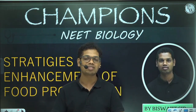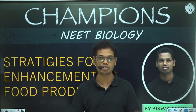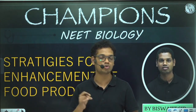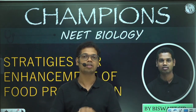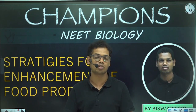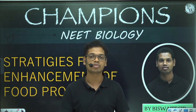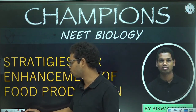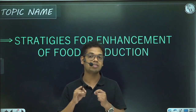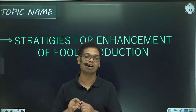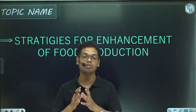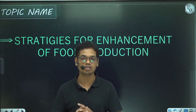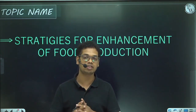Before beginning this lecture, let me tell you that this chapter is very easy and information-based, so you can learn it on your own. However, there is a topic known as tissue culture which is quite conceptual, so to have a proper understanding of that topic you can watch this lecture. The topics we are going to cover today are: what is plant breeding, the different steps in plant breeding, how plant breeding is done to increase yield, resistance against pathogens, resistance against insects or pests, single cell protein (SCP), and finally tissue culture.